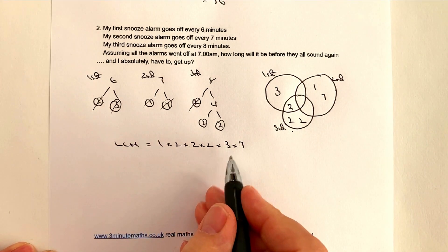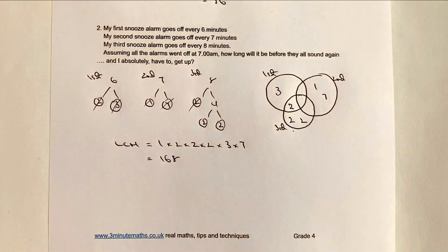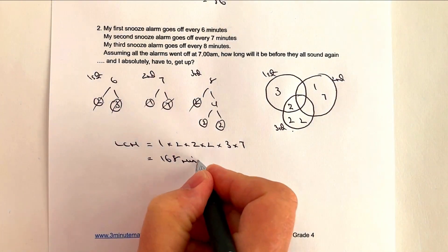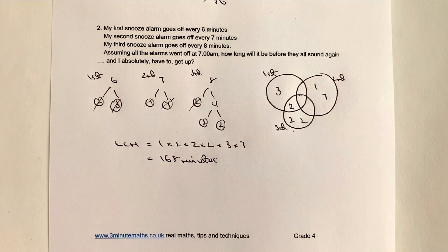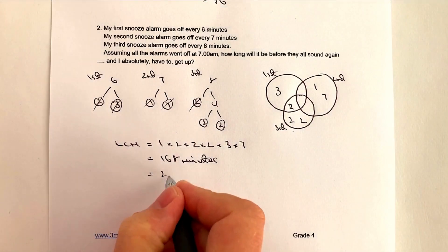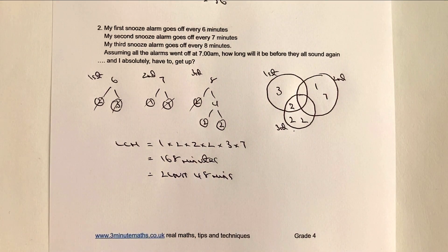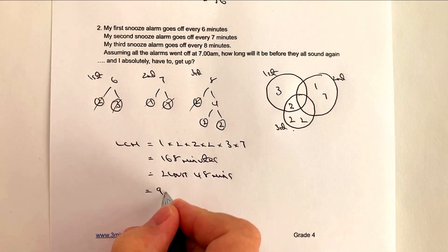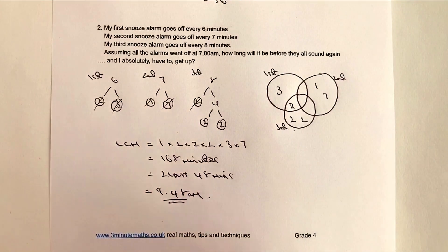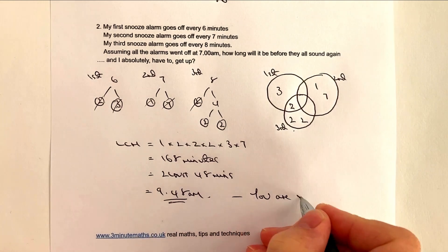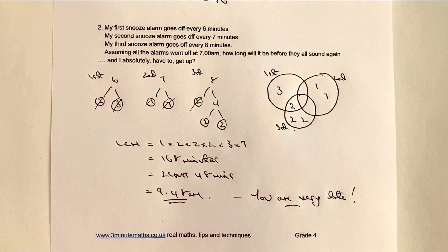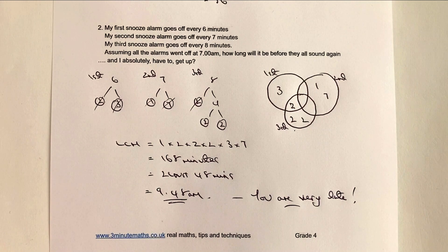The LCM is all of these numbers multiplied together: 1 times 2 times 2 times 2 times 3 times 7, which gives 168. But that's 168 minutes from 7 o'clock in the morning. Bearing in mind there are 60 minutes in an hour, that's 2 hours and 48 minutes. So when do I absolutely have to get out of bed? It's going to be 9:48 a.m.